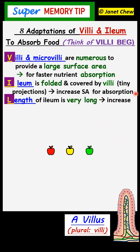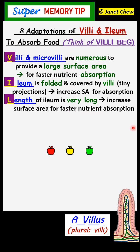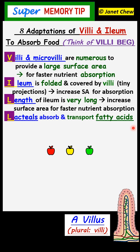L is for length. The length of the Helium is furthermore very long, about 3 meters long, to increase the total surface area for faster nutrient absorption again. So the first three points are the adaptations to increase the surface area for faster nutrient absorption.